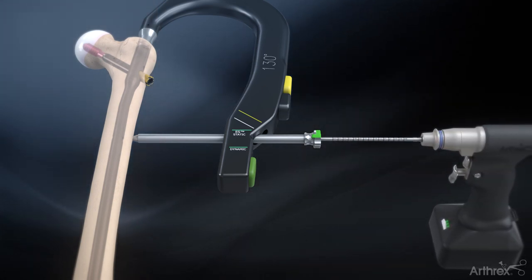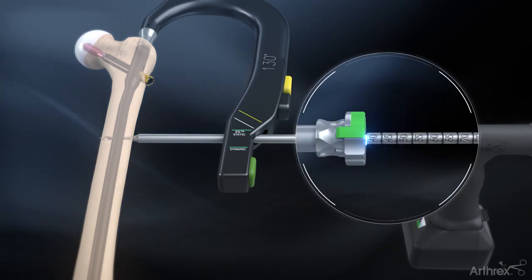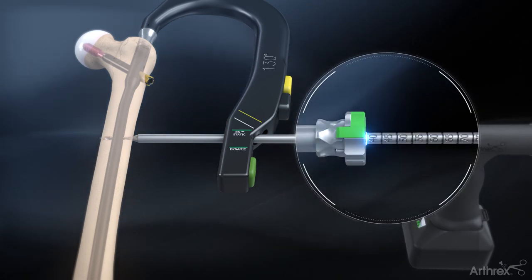Drill bicortically using the 4.0 mm calibrated drill bit. Determine the screw length using the calibrations on the drill bit.